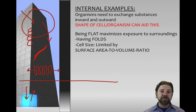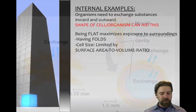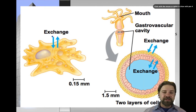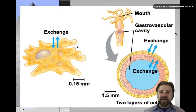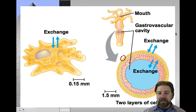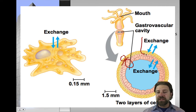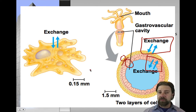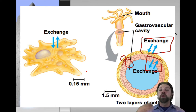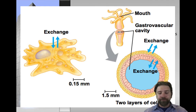An amoeba is limited to a certain size to support exchange of substances. Similarly, the freshwater hydra is only a couple of cell layers thick — an outer layer, an inner layer, and a basement membrane between them. Exchange happens on both the outside and inside surfaces, making it very efficient and evolutionarily successful because of its small body size.